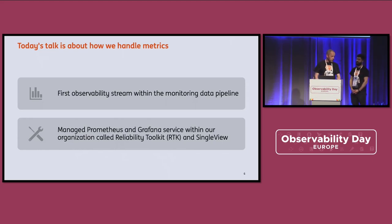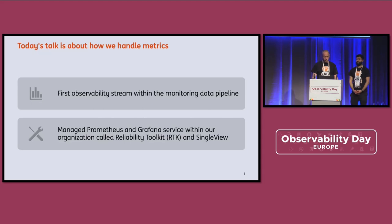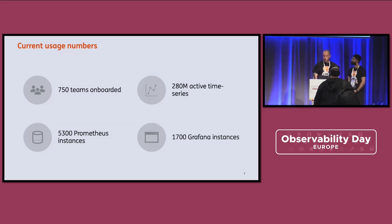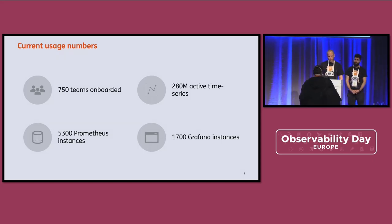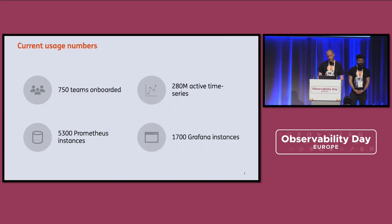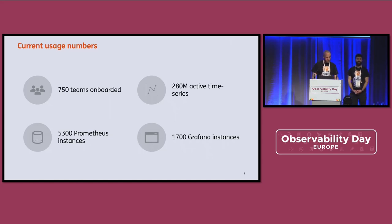Today we're going to talk about how we handle metrics. We created a self-service platform for this — we like to call it the Reliability Toolkit, together with a Single View. Currently we are handling the load of around 5,000 Prometheus instances and around 1,700 Grafana instances.